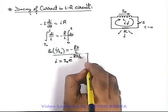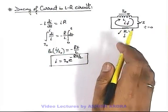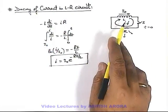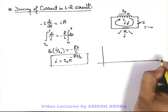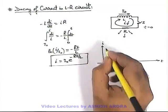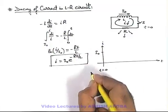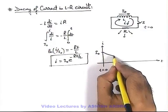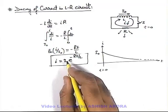This is the expression for current through the inductor when its current decays through a resistance R connected with it. If we plot the time variation of this current, you can see initially at t = 0, the current was i₀, and gradually it decays with time exponentially, dropping down.